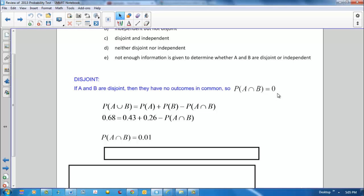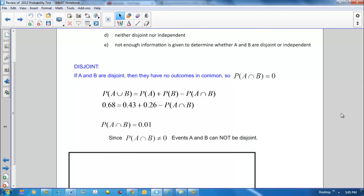So events A and B are only disjoint if their intersection equals 0. Since the intersection of A and B is not 0, then A and B cannot be disjoint.